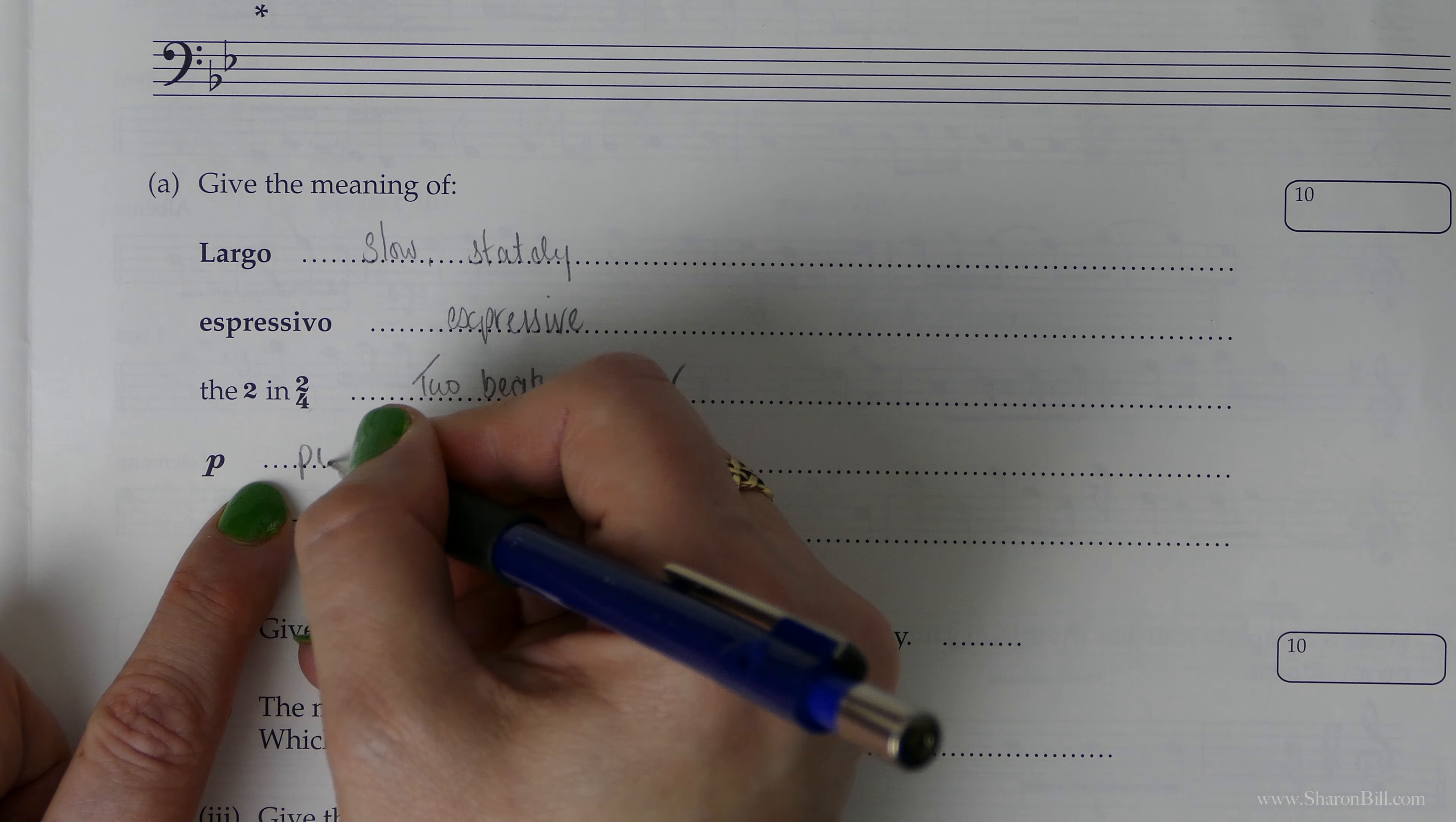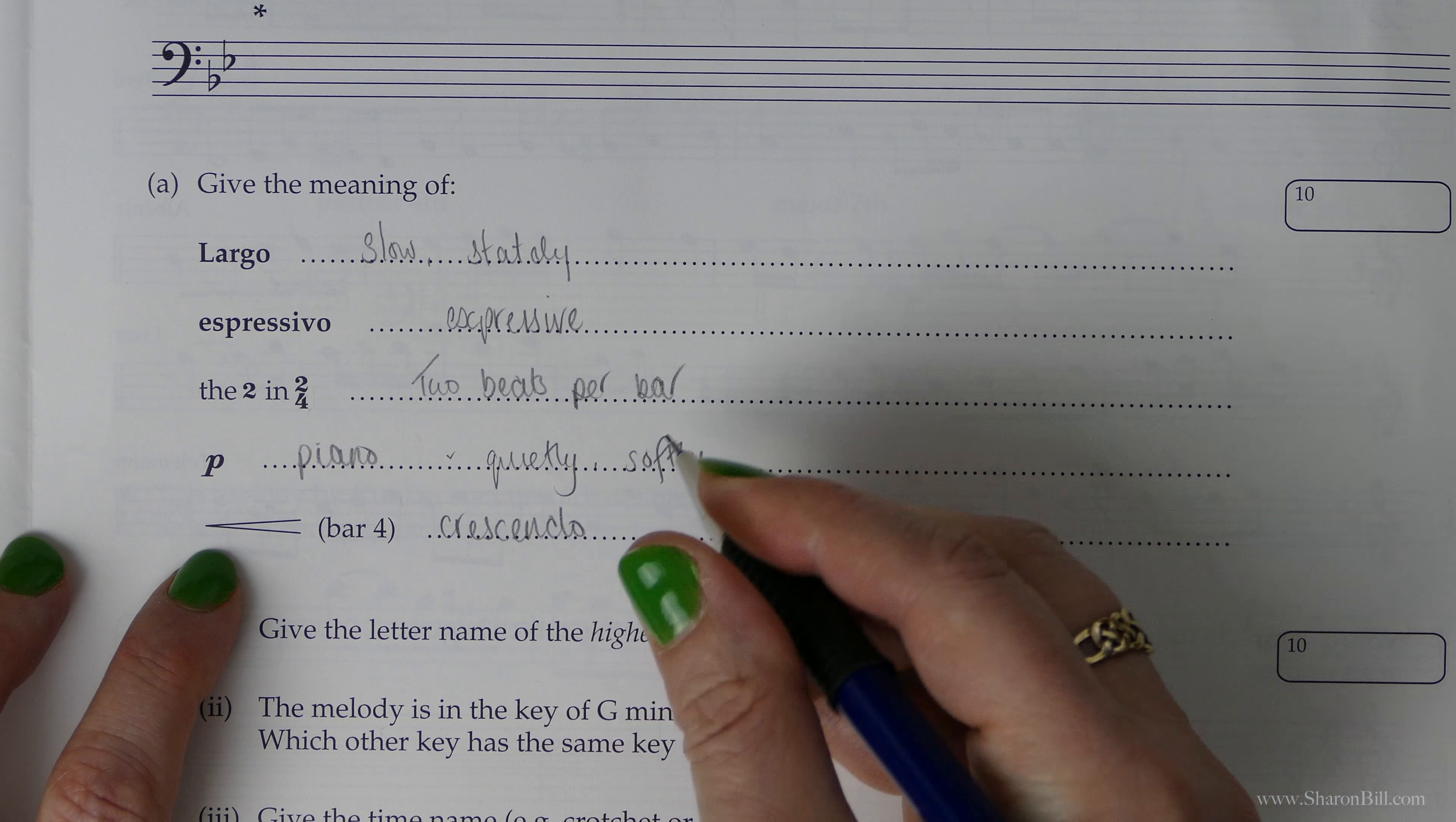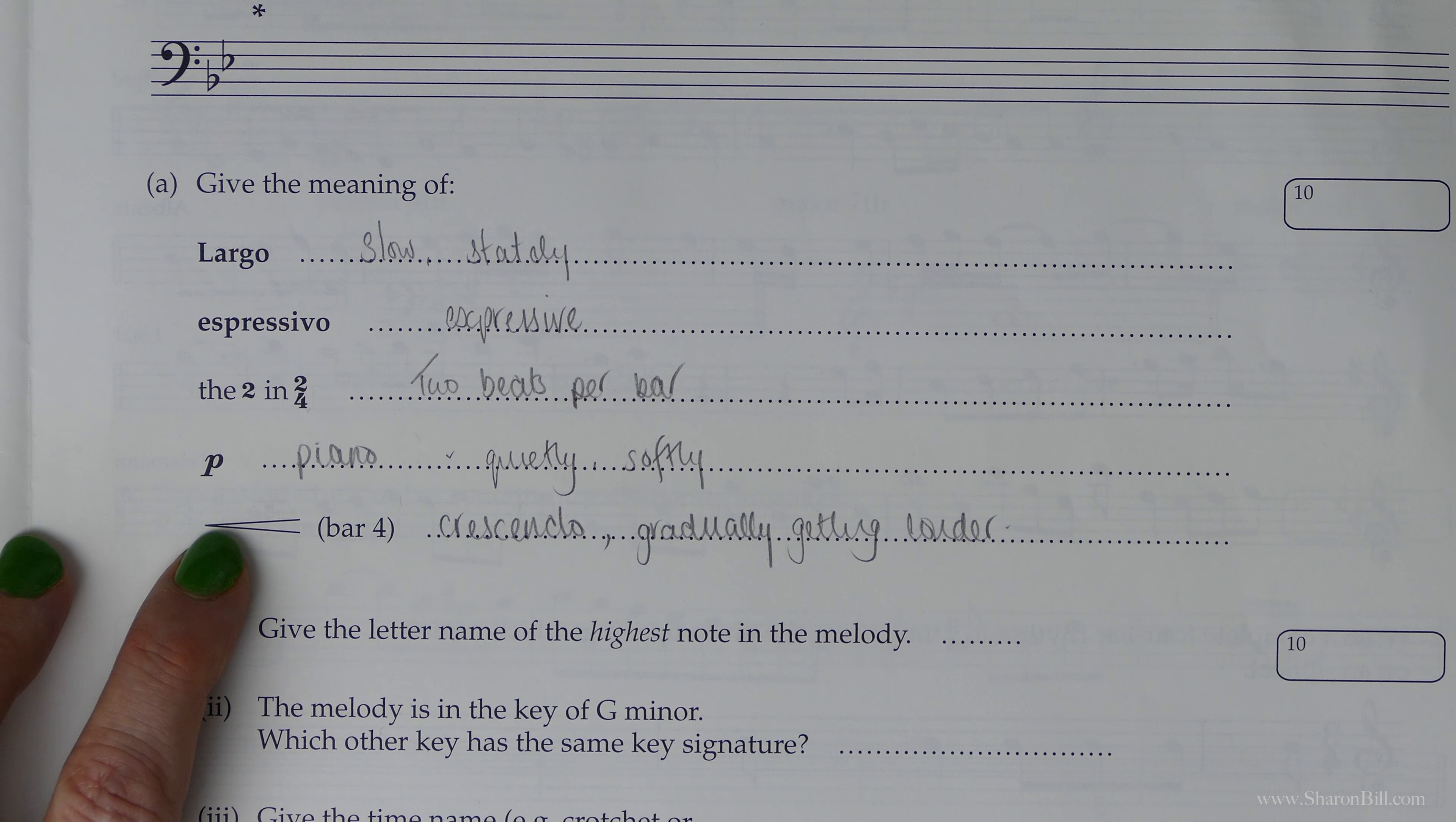P is short for piano but we need to say that it means quietly or softly. And this sign here that's like a hairpin opening out is the sign for crescendo, and it literally means gradually getting louder. It's important that you remember the gradually getting louder—it's gradually opening out.